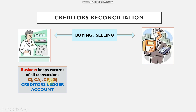The cash payments journal (CPJ) is used when we make payments to the creditor — either by issuing checks or via electronic funds transfer (EFT). The general journal records transactions that cannot be recorded in any of the other specialised journals, such as interest charged by the creditor.